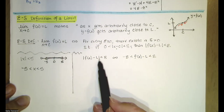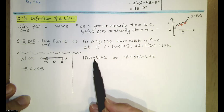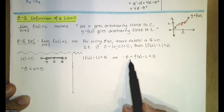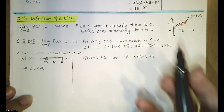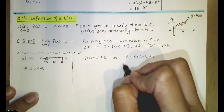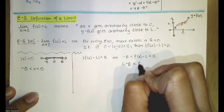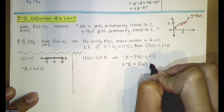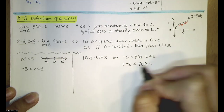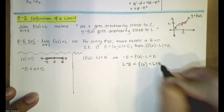In the same way, if the absolute value of f(x) minus L is less than epsilon, then f(x) minus L has to be between negative epsilon and epsilon. Adding L to all three parts, we have that f(x) is between L minus epsilon and L plus epsilon.